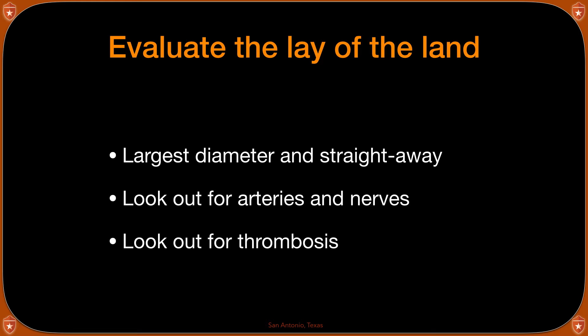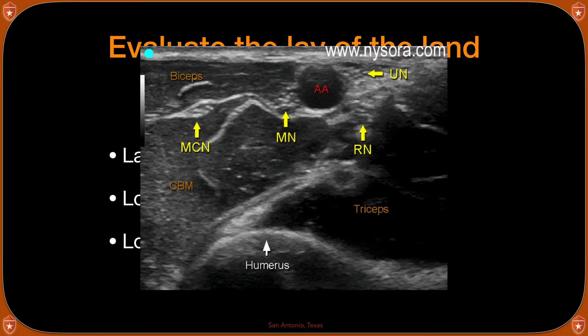Look out for arteries and nerves. Arteries have a thicker wall, are pulsatile, and are not as easily compressible as a vein. Nerves look like little honeycomb structures and oftentimes surround an artery — here you can see the median nerve, radial nerve, and ulnar nerve denoted in yellow. Avoid arteries and nerves to decrease the amount of pain and complications during central line placement.